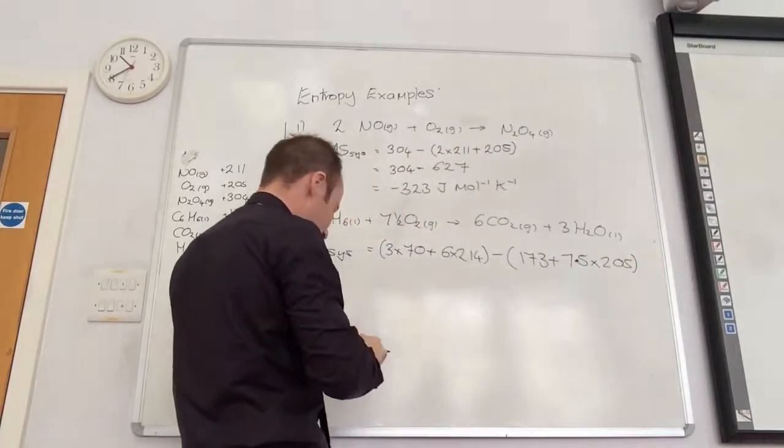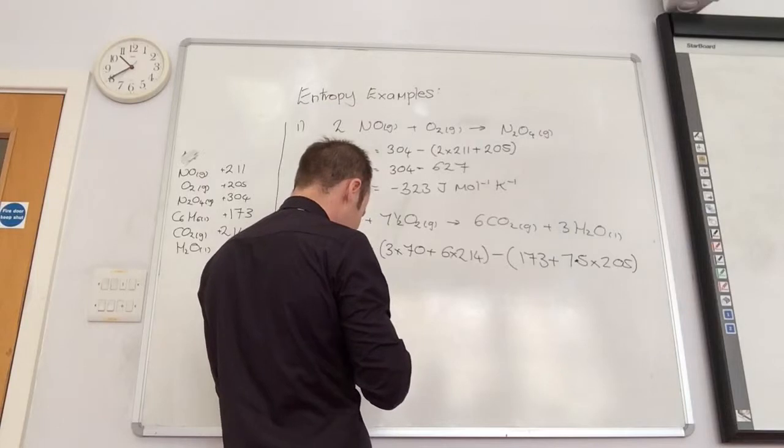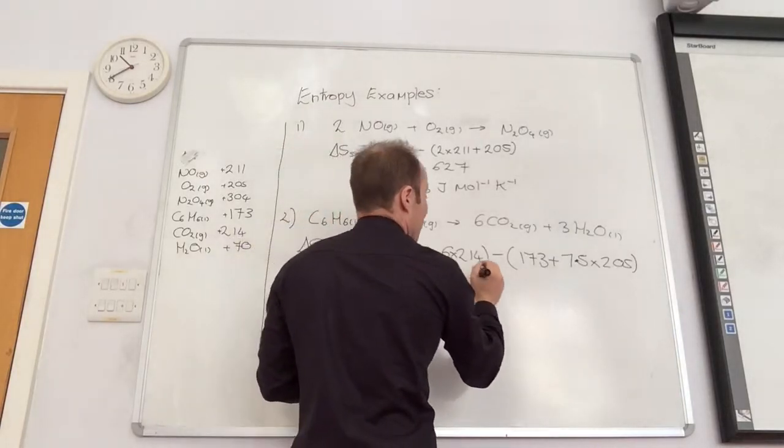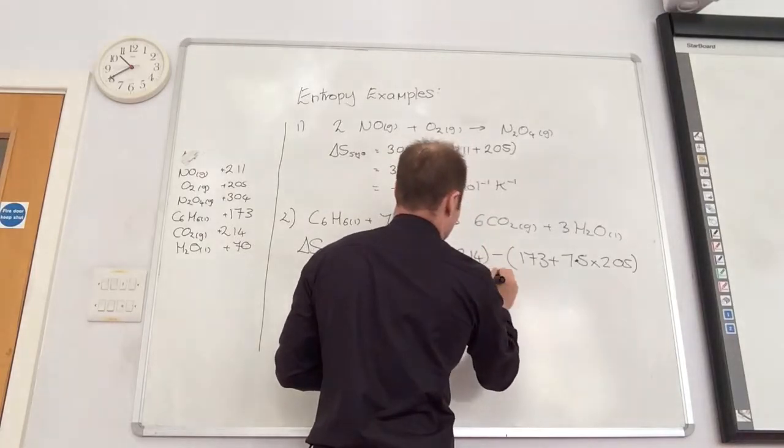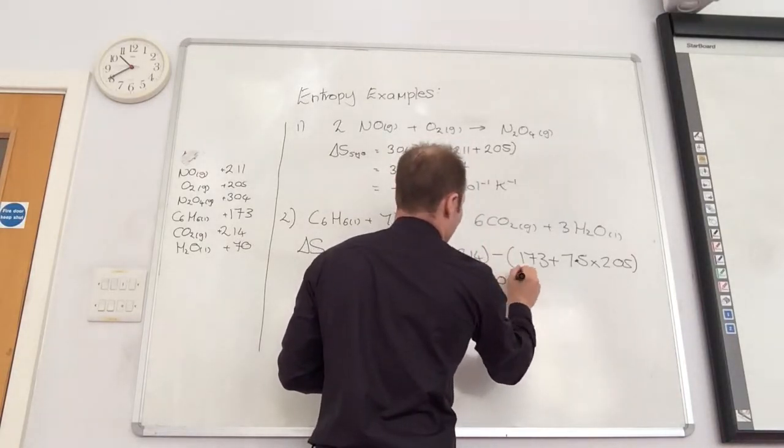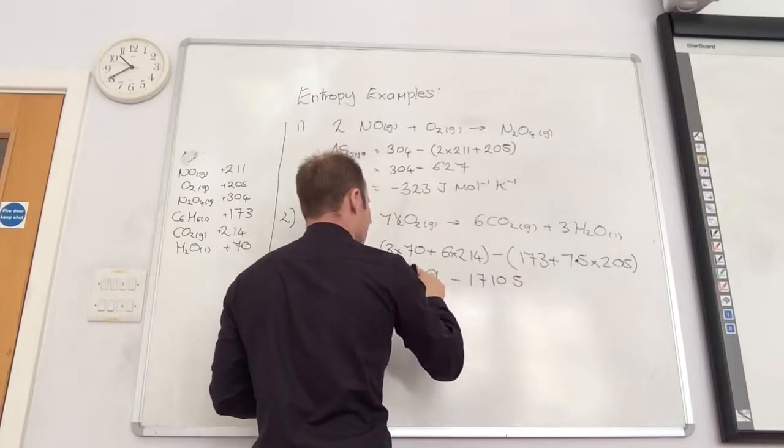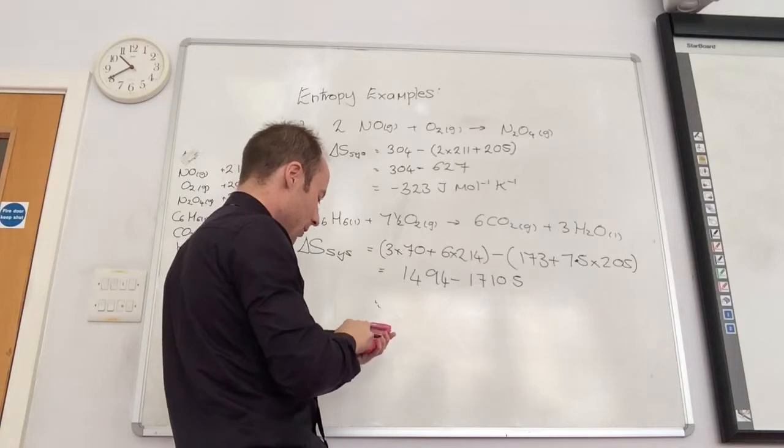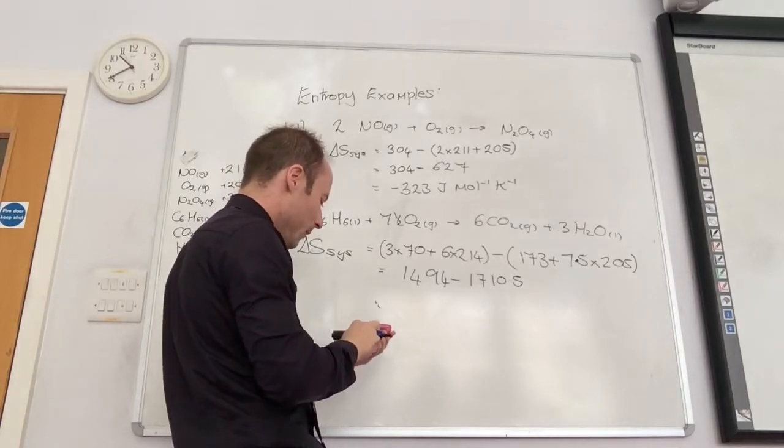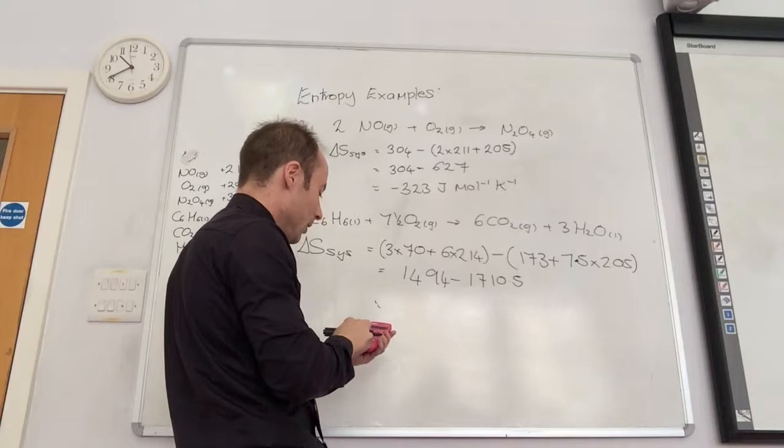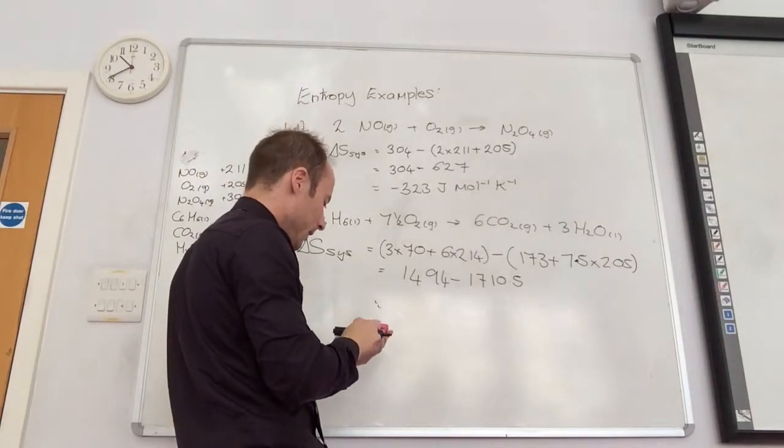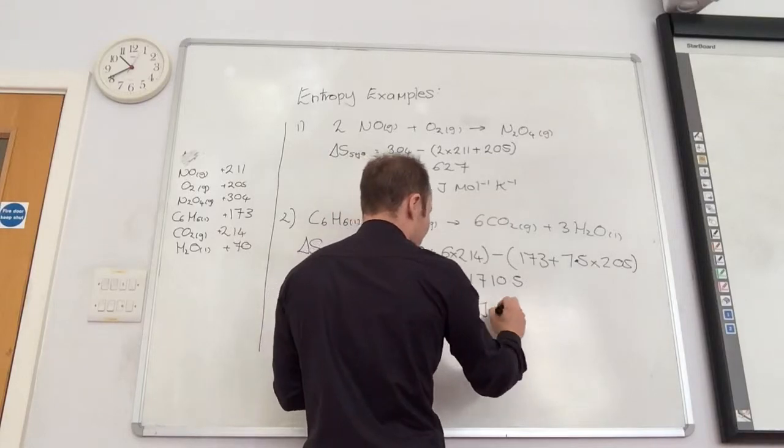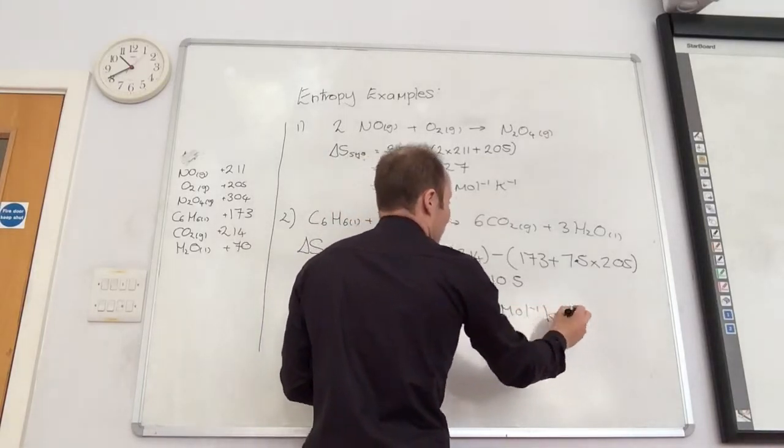So let's have a look. Has anybody worked out the brackets at all? That's 1494 minus 1710.5. 1710.5, and we're going to start at 1494. Thank you very much. So let's see if we all get the same answer. 1494 minus 1710.5 comes to minus 216.5 joules per mole per Kelvin.